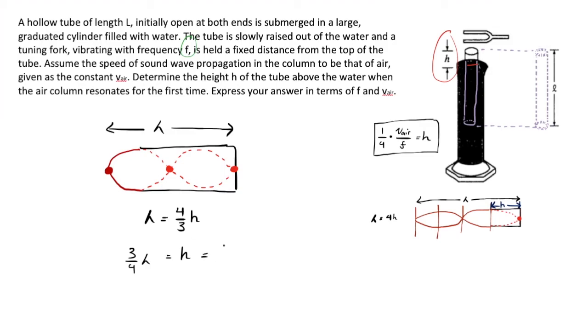In terms of the solution we got, our second height, let's refer to it as h prime, is three quarters of the ratio of the velocity of air to the frequency. And so you will find that each successive height changes this numerator. It is an odd number starting at one.